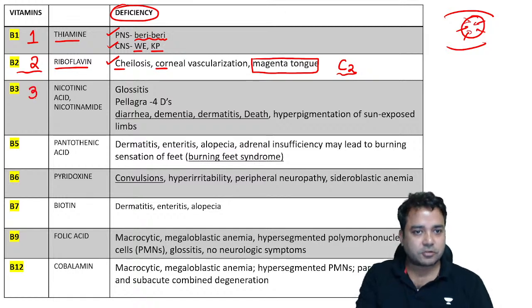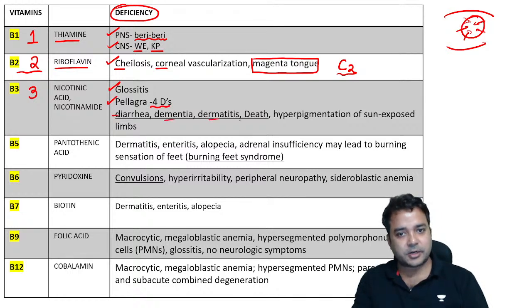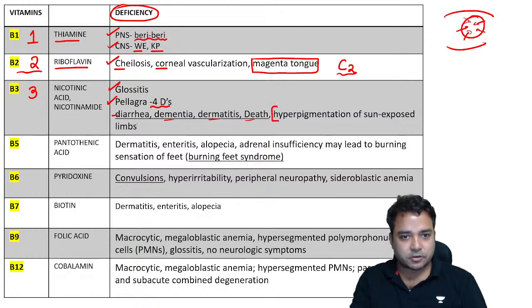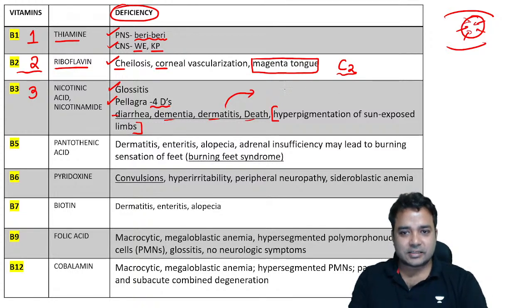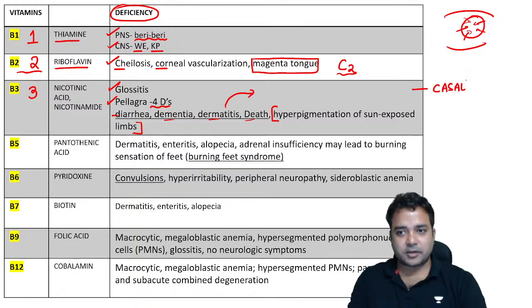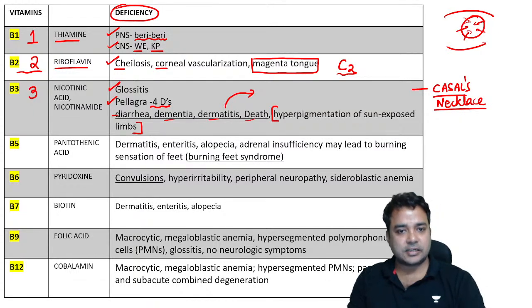B3 (niacin/nicotinamide) — leads to glossitis and pellagra with four D's: diarrhea, dementia, dermatitis, and death. In addition, hyperpigmentation of sun-exposed limbs. The dermatitis can be in the form of Casal's necklace — dermatitis in the neck area on exposed skin — which is a repeatedly asked topic.